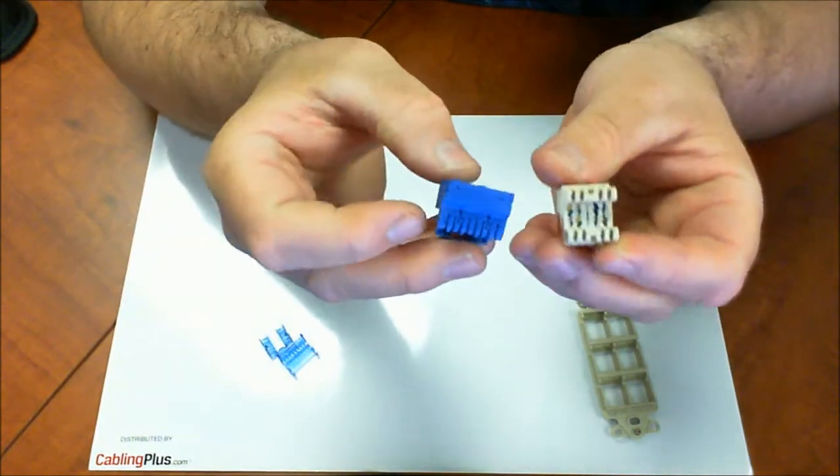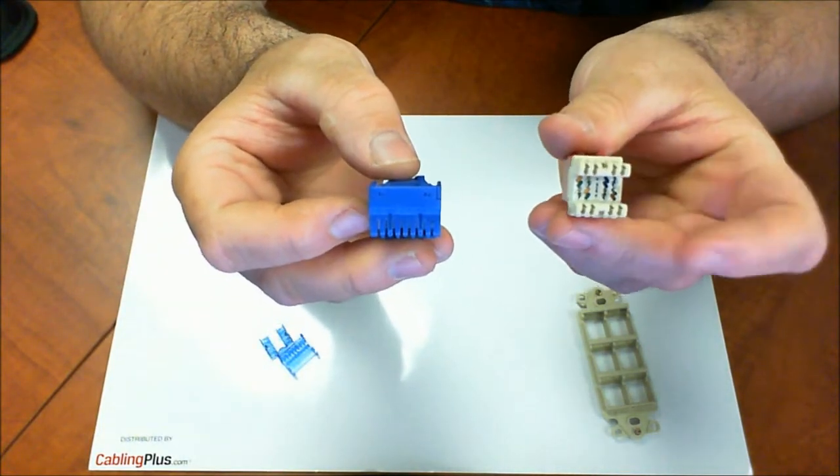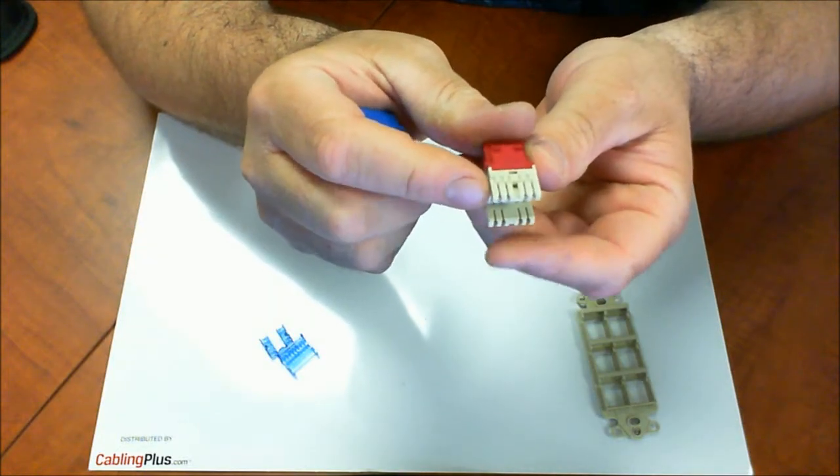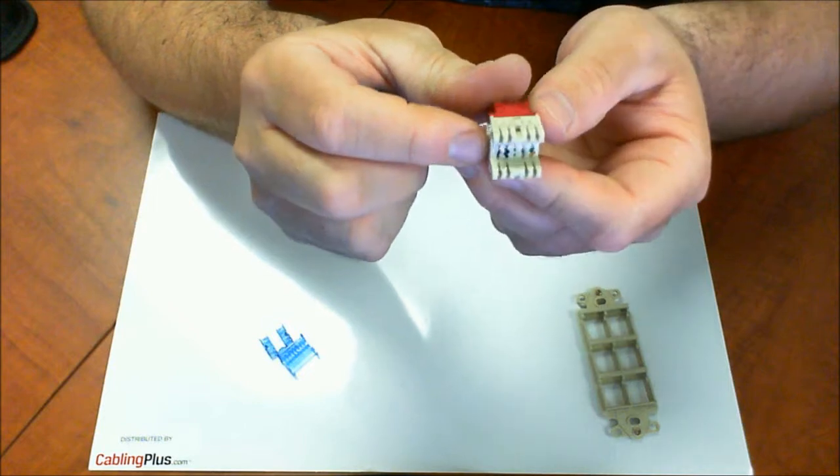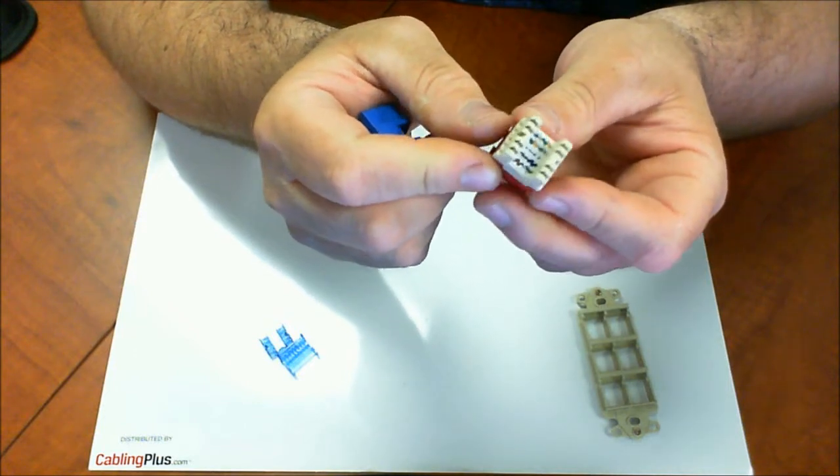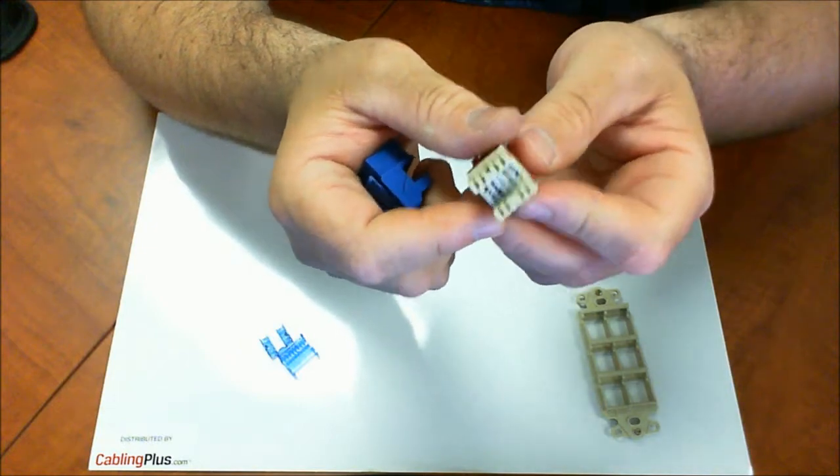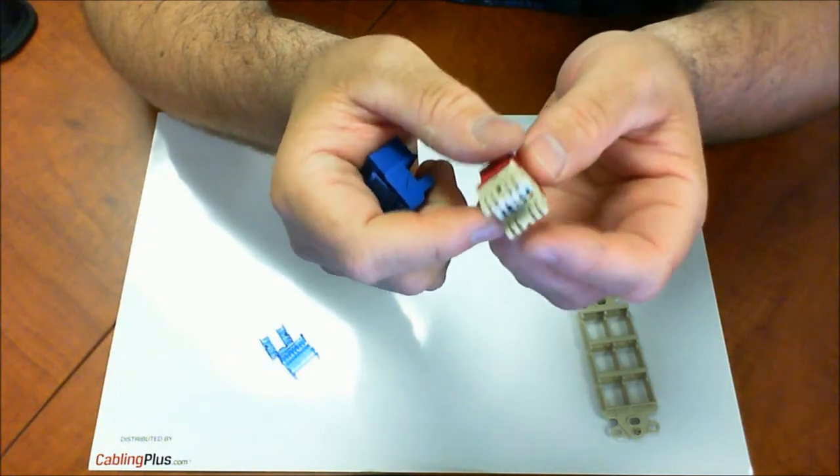So if you take a look at the EZ and the HD, the HD over here is a lot slimmer. The rear end of it is a lot narrower and really the reason they call it HD is because they're made for high-density applications, and that would be if you're using multiple connectors on maybe a blank patch panel or even like a Decora insert.